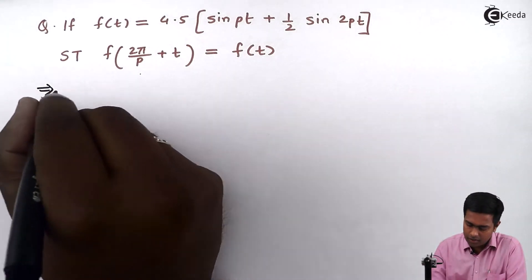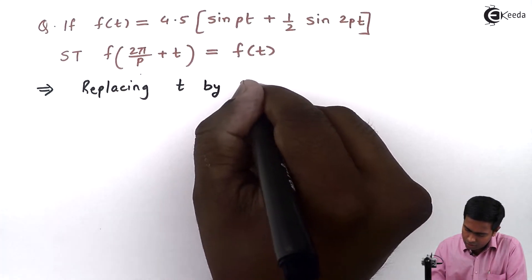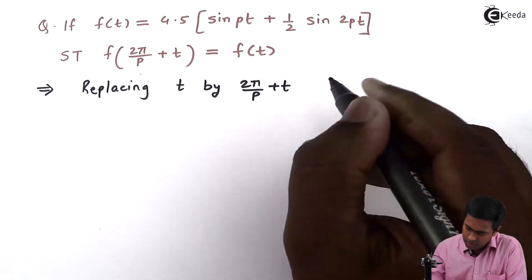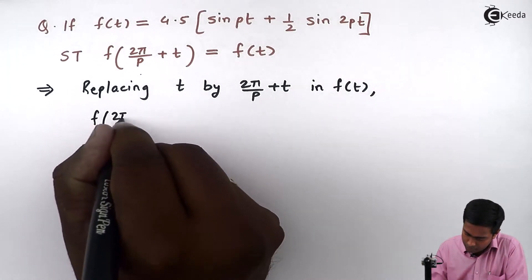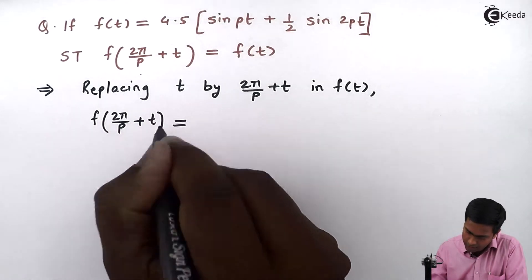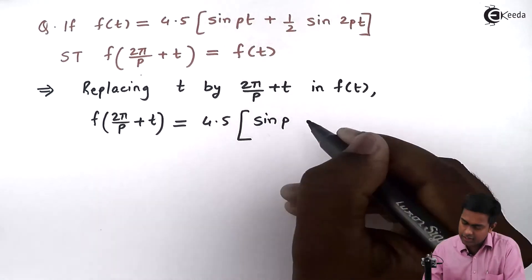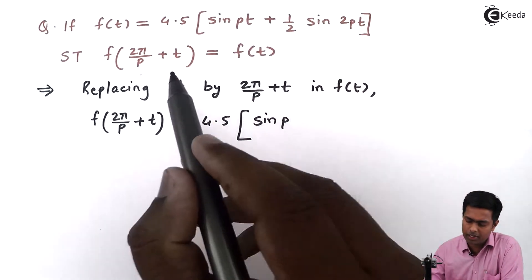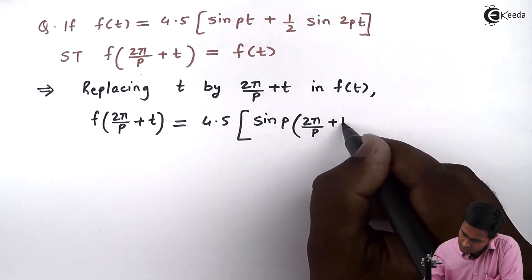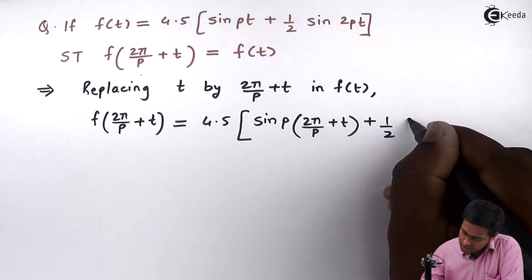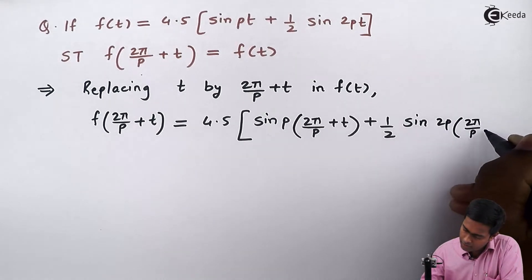Replacing t by 2π/p plus t in f of t, we will get f of (2π/p + t) equals 4.5 inside the bracket sin p times (2π/p + t) plus 1 by 2 sin of 2p times (2π/p + t).